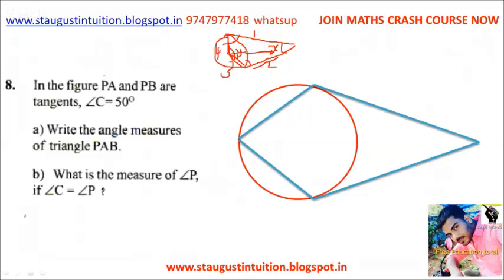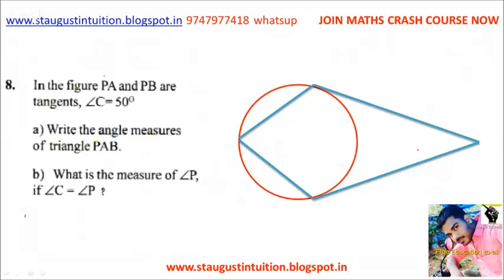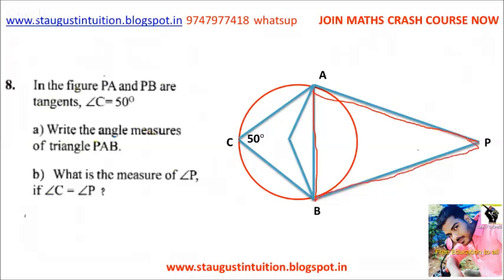We have 4 angles in this quadrilateral. This angle is 100. If we get 150, we get 150. So this is 80. This is 80. This is the right angle. Now this is 50.